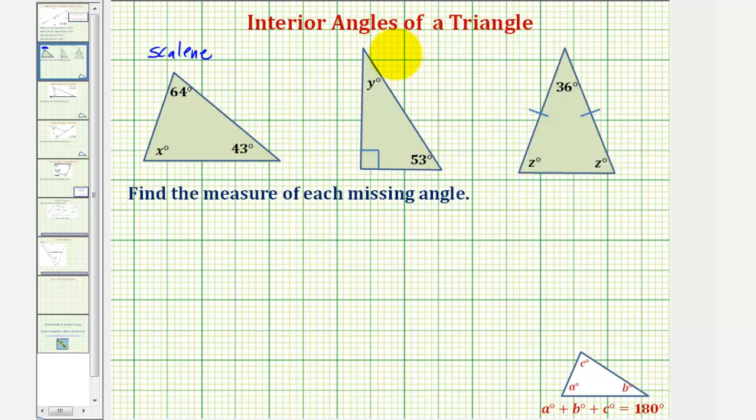Our second triangle is a right triangle because one of the interior angles measures ninety degrees. And then finally the third triangle is an isosceles triangle because two sides have the same length and therefore the base angles or the angles opposite the sides of equal length have the same measure. Notice how here they're both labeled c degrees.